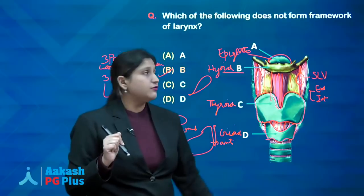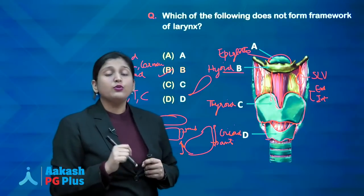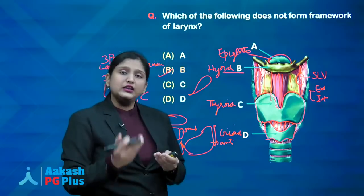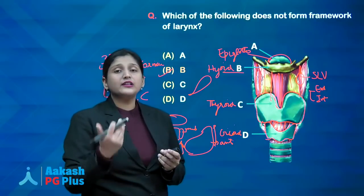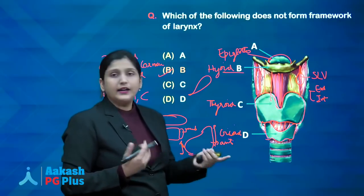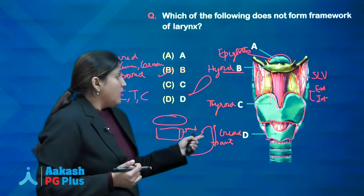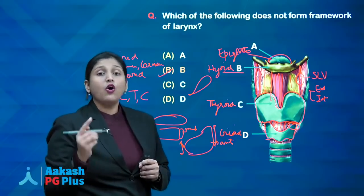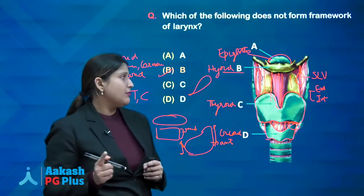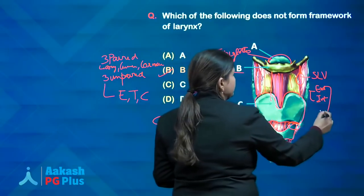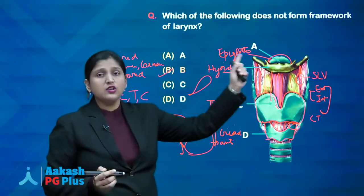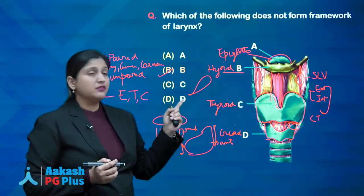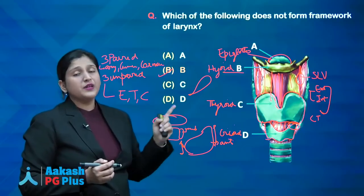Which nerve is responsible for referred otalgia from growths in the piriform sinus? The answer is the internal laryngeal nerve of the superior laryngeal nerve, or simply vagus. The recurrent laryngeal nerve passes through the cricothyroid joint and supplies all intrinsic muscles of the larynx except the cricothyroid, which is supplied by the external branch of the superior laryngeal nerve. Blood supply is through the superior laryngeal blood vessels from the superior thyroid artery.